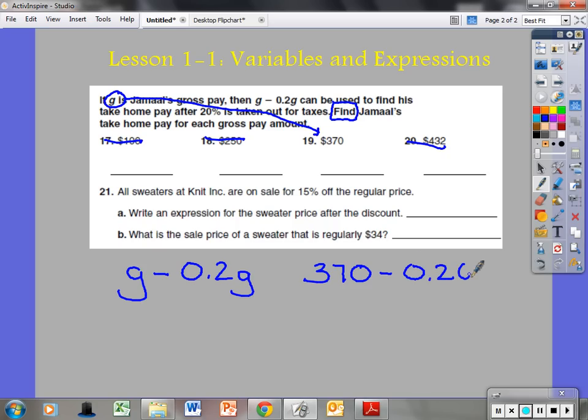$370 minus, now we have to figure out what 20% of Jamal's pay was. So 2 tenths times 370. So what do I do, subtract or multiply first? Correct, I multiply first. So let's take 370 times it by 2 tenths. 7 times 2 is 14, 2 times 3 is 6 plus 1 is 7. Move the decimal place over once, $74. So now my expression would say $370 minus 74. I am going to get 200. Now if I took away 70 that would be 300, I have to take away 4 more. So that's $296 is Jamal's take home pay.